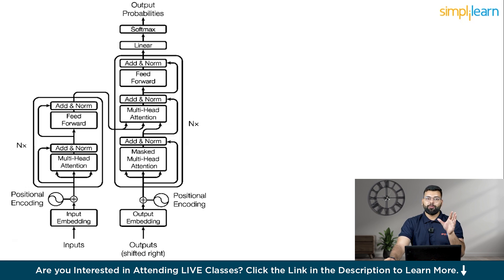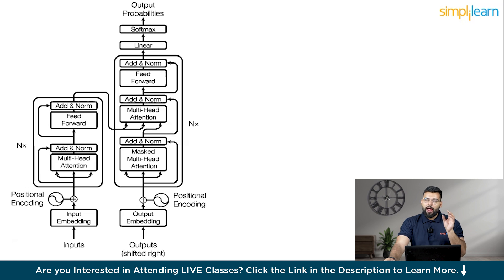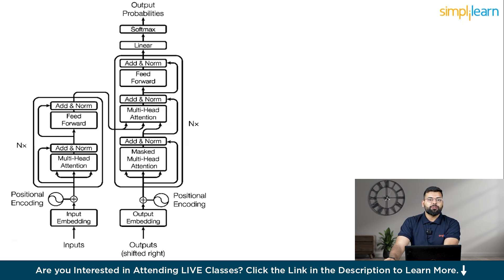In the decoder: output embedding is similar to input embedding but for the target sequence, followed by positional encoding. Then masked multi-head attention processes the target sequence while masking future tokens to prevent the model from looking ahead. After an add-and-norm layer, multi-head attention attends to the encoder's output, allowing the decoder to focus on relevant parts of the input. This is followed by add-and-norm, a feed-forward layer, and another add-and-norm. Finally, a linear and softmax layer converts the decoder output into probabilities predicting the next token. The encoder processes the entire input, and the decoder generates the output step by step.